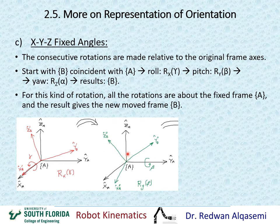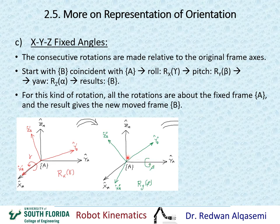Then we go on to the next rotation: rotation about y by beta. This is the critical point — we are doing the rotation about the original y-axis, which is y_A, the black line. When we do this rotation about y_A by the amount of beta, all three axes of frame B are moved. I call them B double prime: y_B'', z_B'', and x_B''.